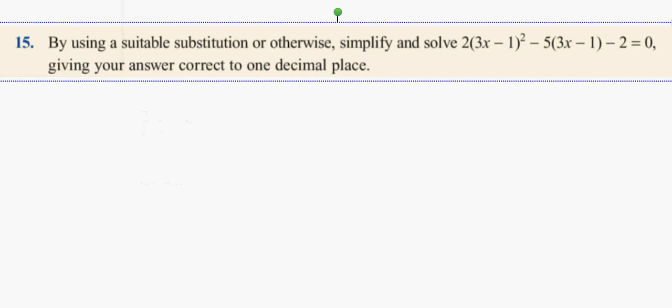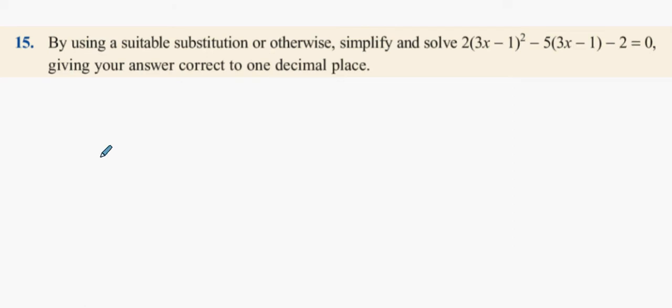Guys, it says using a suitable substitution or otherwise, simplify and solve the following equations. Now, what I'd be inclined to do here is I'd be inclined to say 2 times blank squared minus 5 times blank minus 2 equals 0.